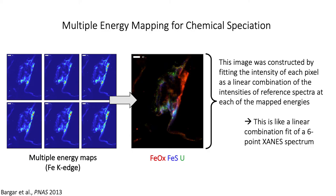In one example, the author obtained the distribution of iron oxide (shown in red) and iron sulfide (shown in blue), and compared that to the distribution of uranium in the sample, in order to understand how iron speciation controlled uranium speciation in uranium-contaminated sediments.